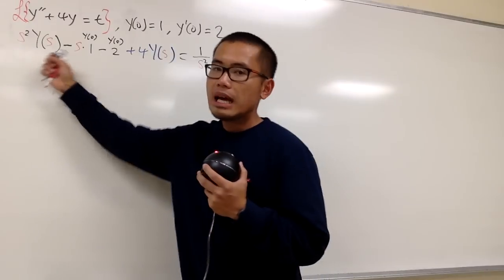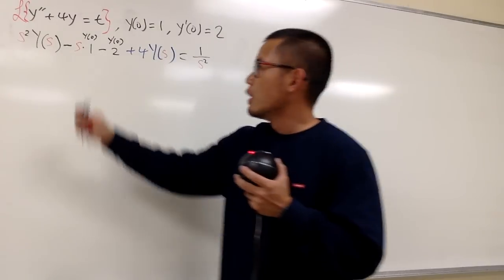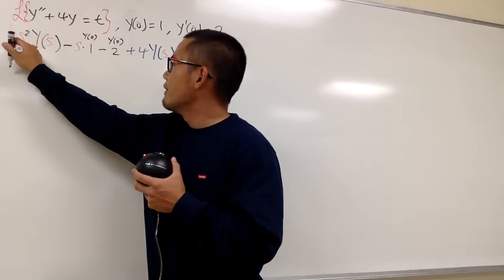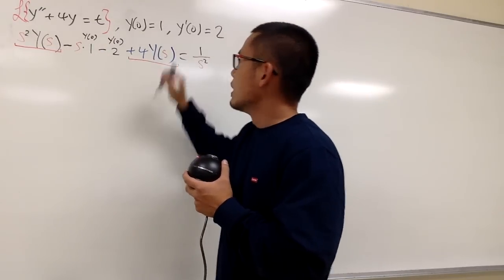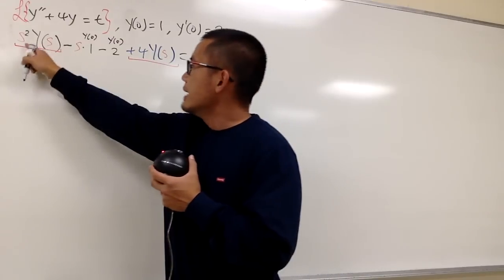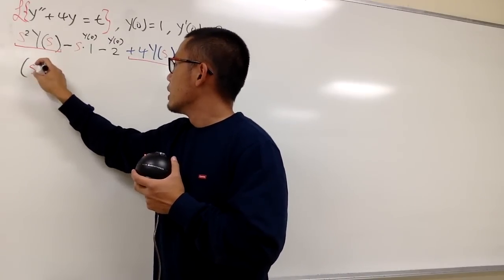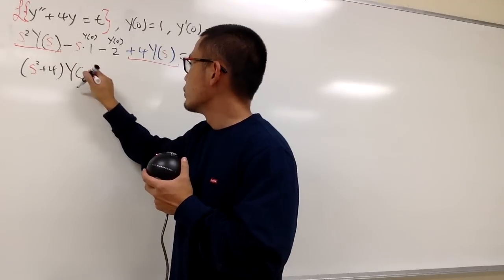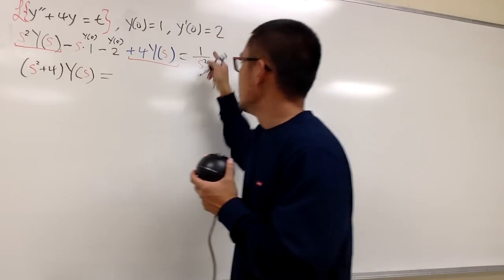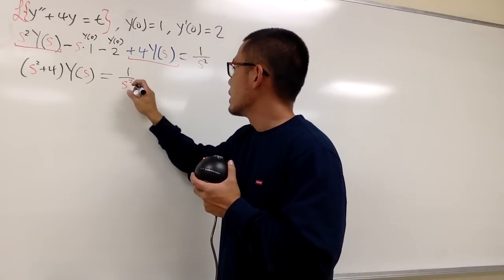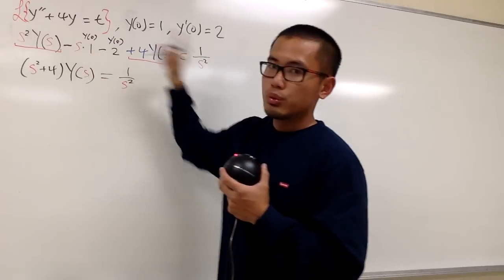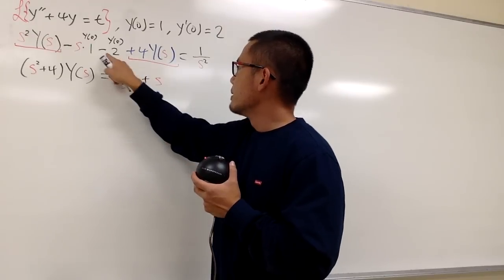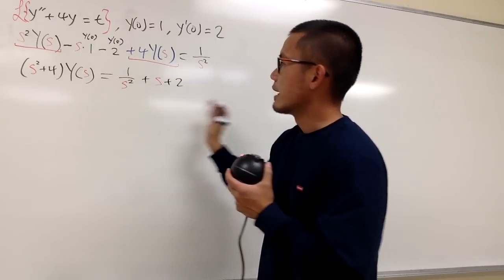So this is what we have. On the left-hand side, we have to isolate Y(s) and put everything else onto the other side. We have Y(s) here and here, so let me factor out Y(s) and put down s squared plus 4. Then we have 1 over s squared on the right, and moving the other terms over gives us plus s and plus 2.